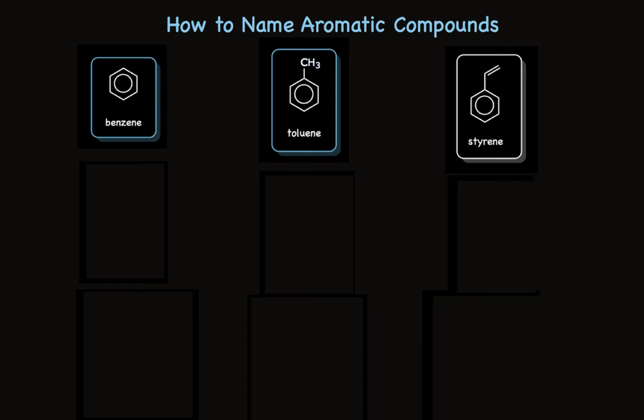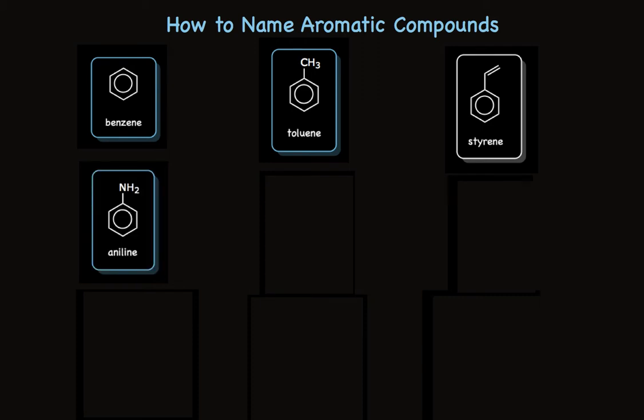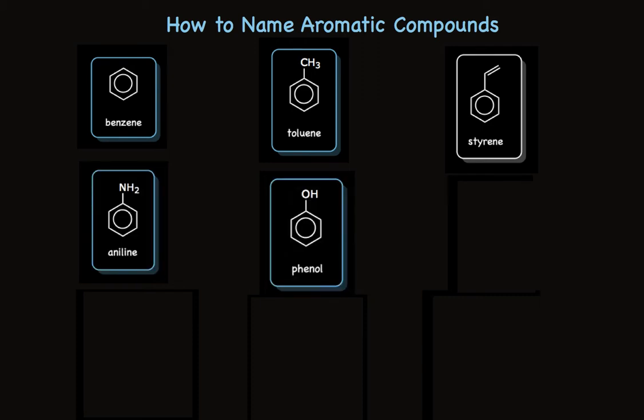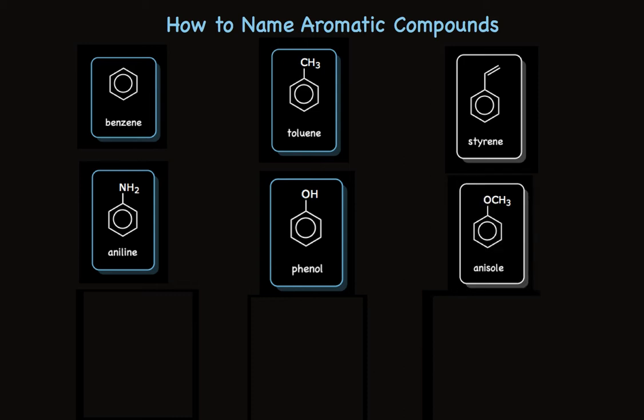The substituents on the benzene ring can have heteroatoms such as nitrogen or oxygen. This is aniline. This is phenol. And a cousin to phenol that has a methoxy group is called anisole.